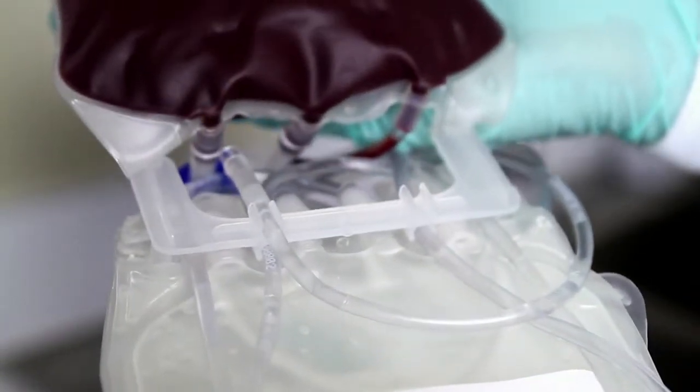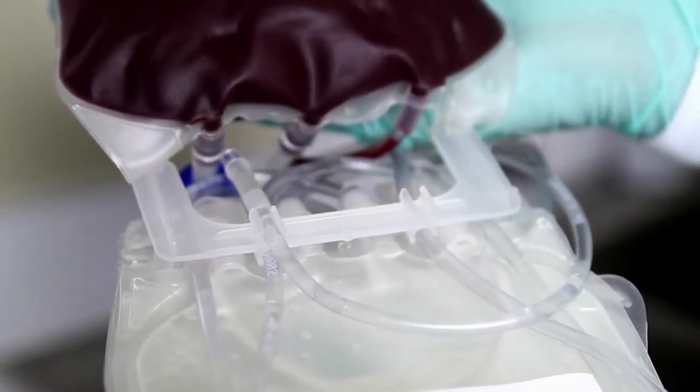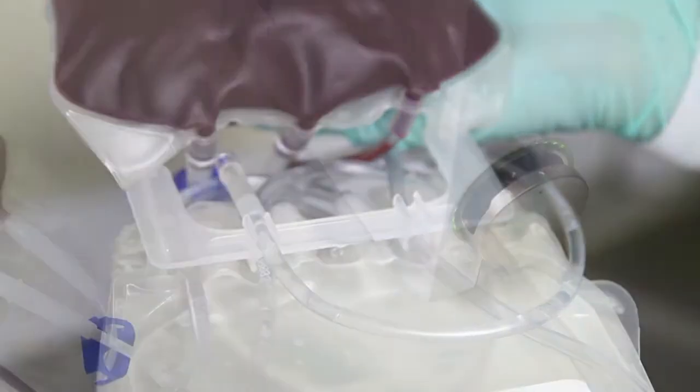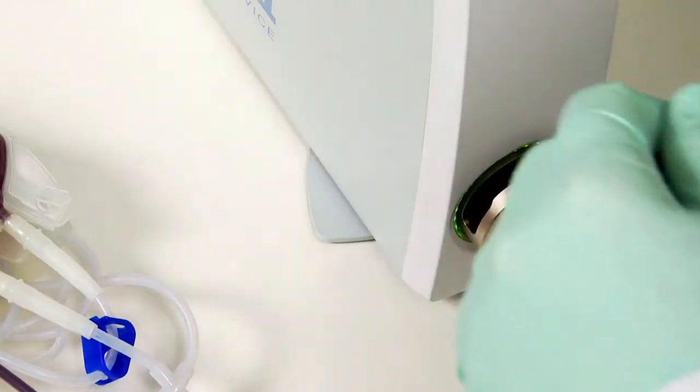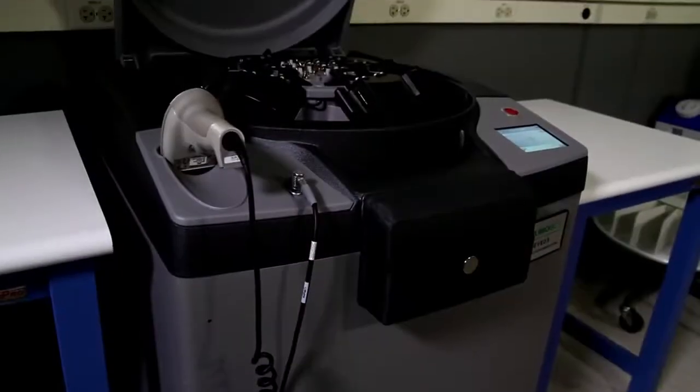The Revios set also includes an organizer to make handling the bags easier throughout the process. When the donation is complete, the collection line is sealed and the whole blood unit is sent for processing on the Revios system.